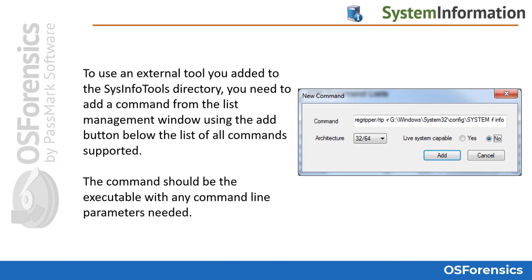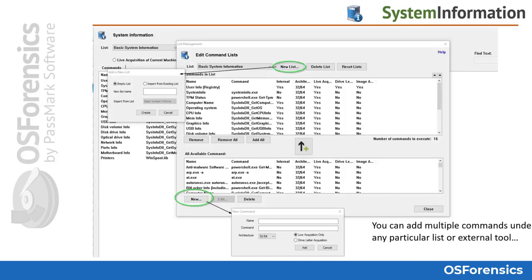Once your executables have been placed in the appropriate folder, you can then add the necessary scripts associated with that program to use with it within the system information module. This slide shows the difference in creating a new list title or name and then how to add new commands or scripts to the available commands list.